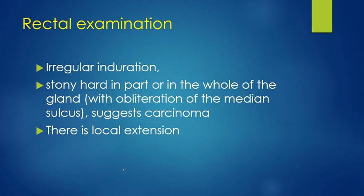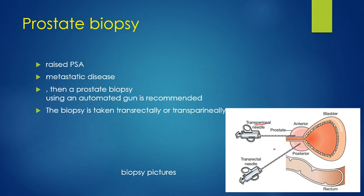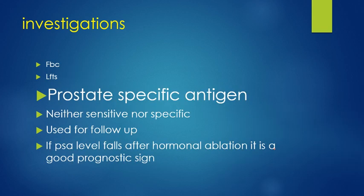On rectal examination, irregular induration and a stony hard touch suggest prostate CA. Prostate biopsy is done when PSA is raised. For metastatic disease, biopsy is also performed. There are two methods of taking a prostate biopsy: transperineal and transrectal, with transperineal becoming more popular nowadays.